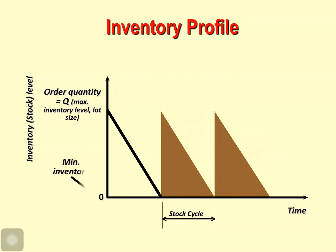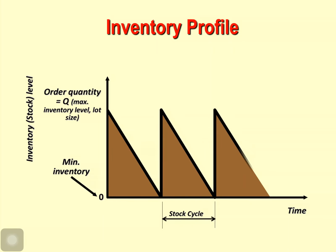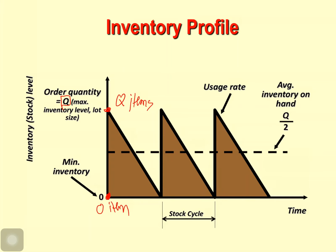Here is a figure for the inventory profile. You can see they have a cycle. This point is when our inventory is zero — we have nothing on hand. Then we order a quantity equal to Q, and when we receive the order we will have Q items. Zero is the minimum inventory and Q is the maximum. The average inventory on hand equals zero plus Q divided by 2, which gives Q divided by 2. One cycle from zero to the next zero is called one stock cycle.